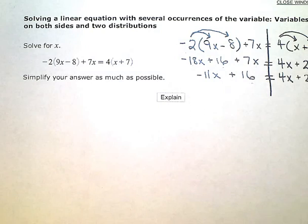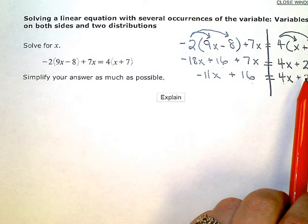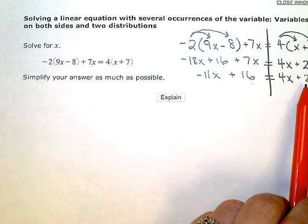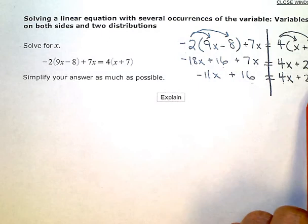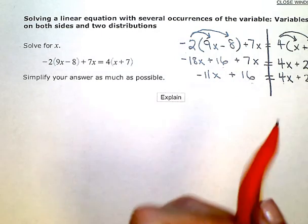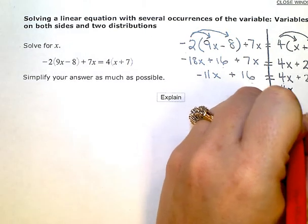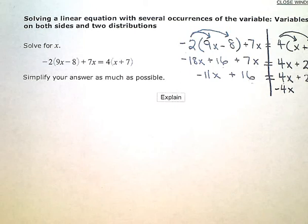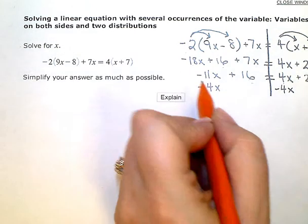So now I have a variable term on each side of the equals and a constant term on each side. I want variable terms on one side, constant terms on the other. I'm going to zero out or get rid of this 4x by using the inverse operation, subtract 4x or add a negative 4x. And then I need to keep my equation balanced by doing the same thing on the other side.